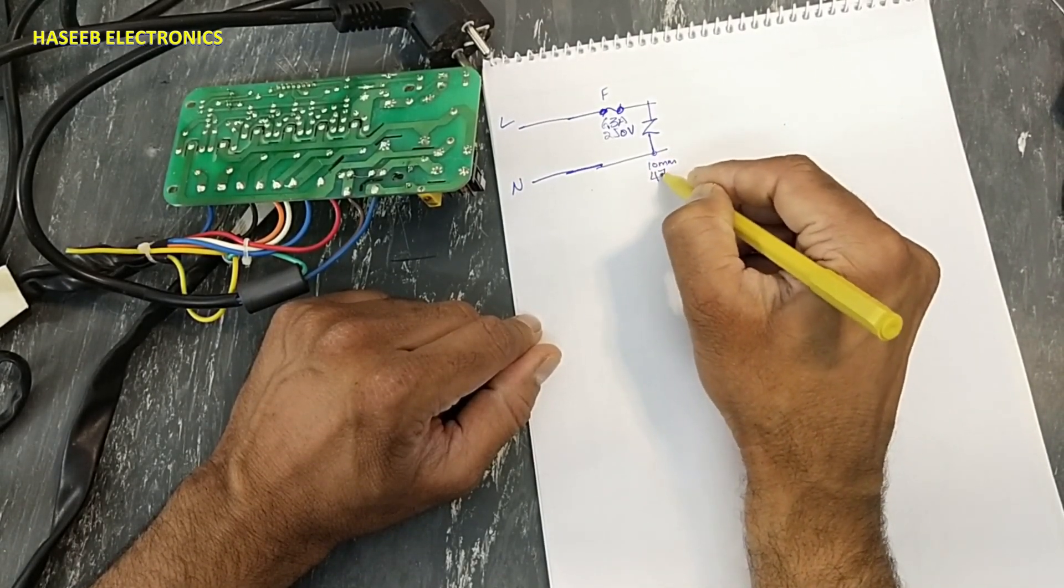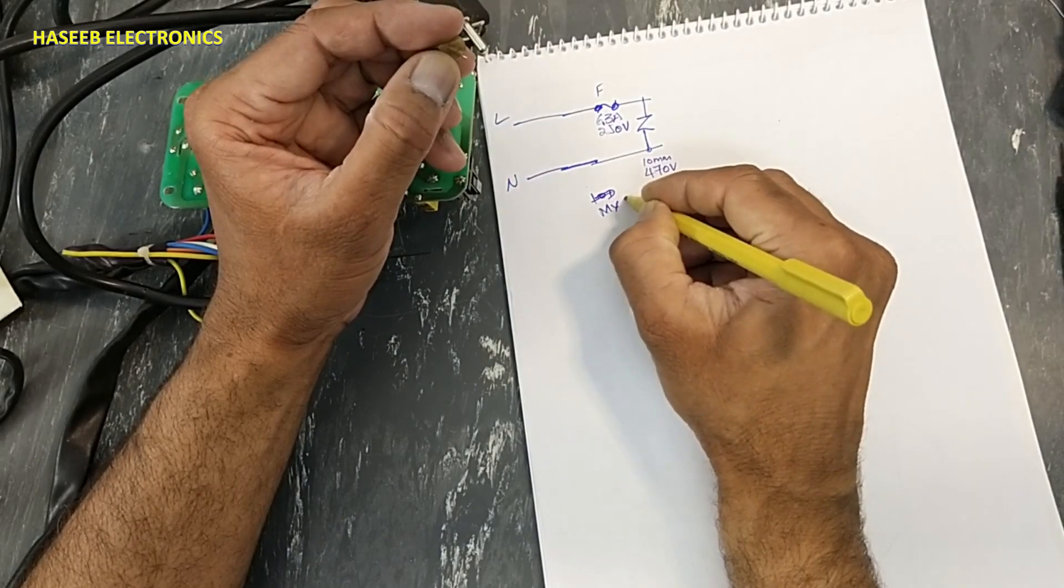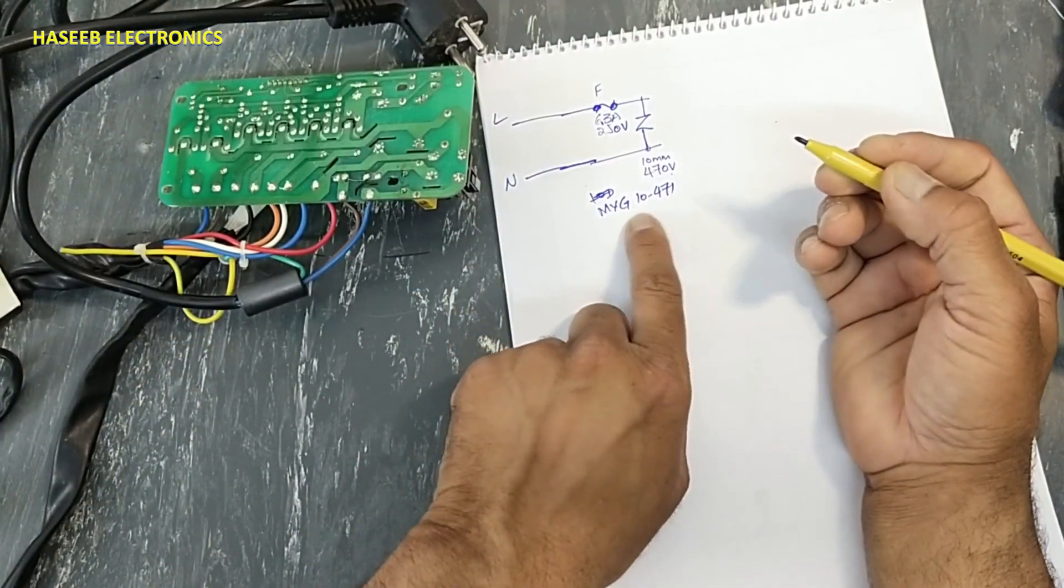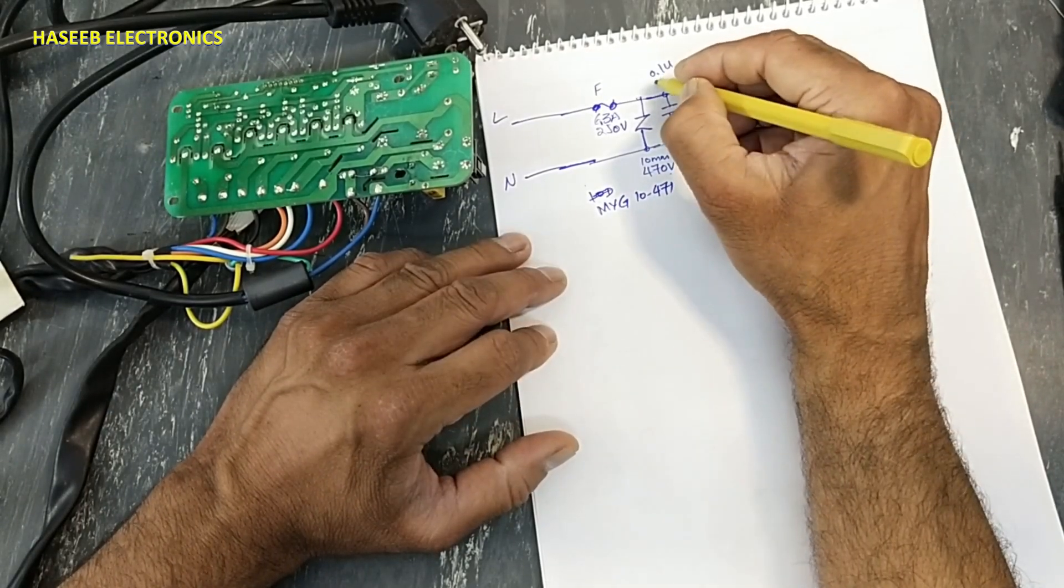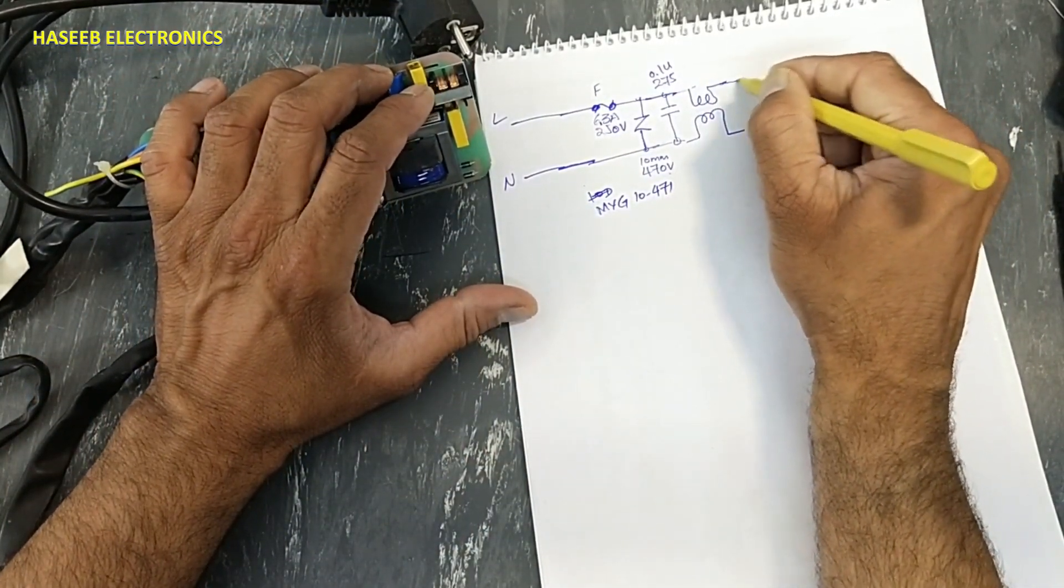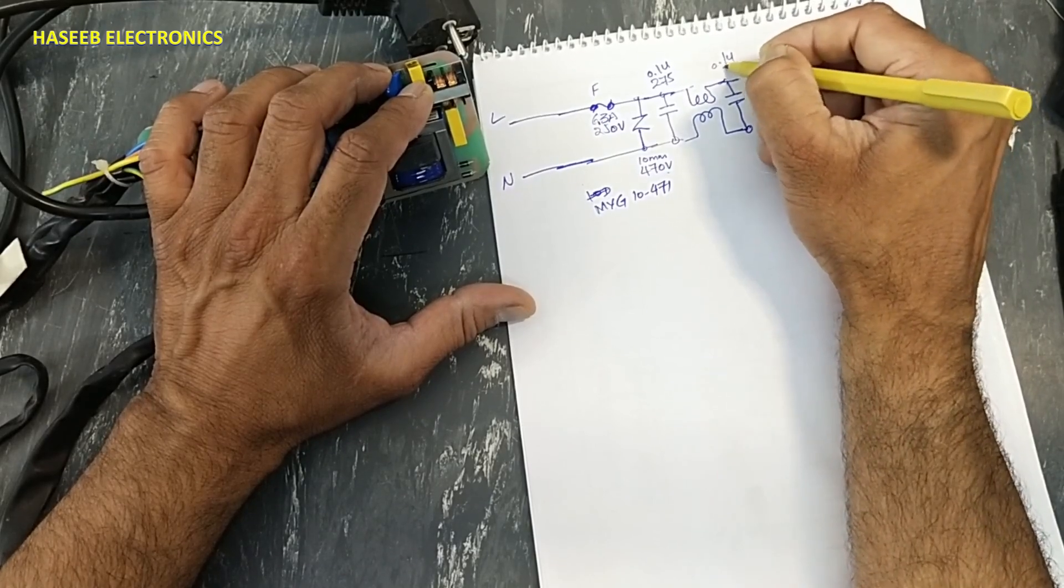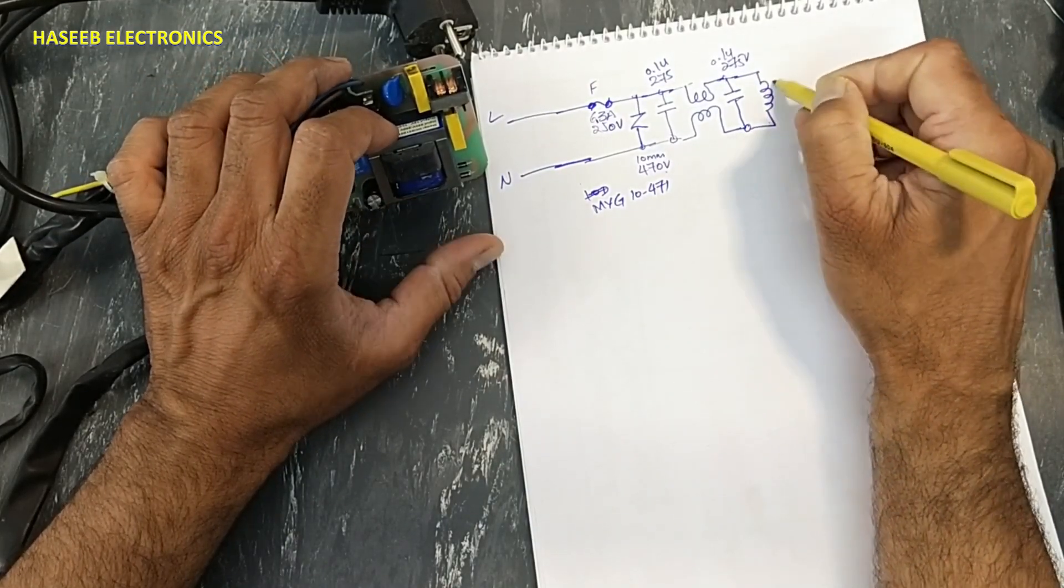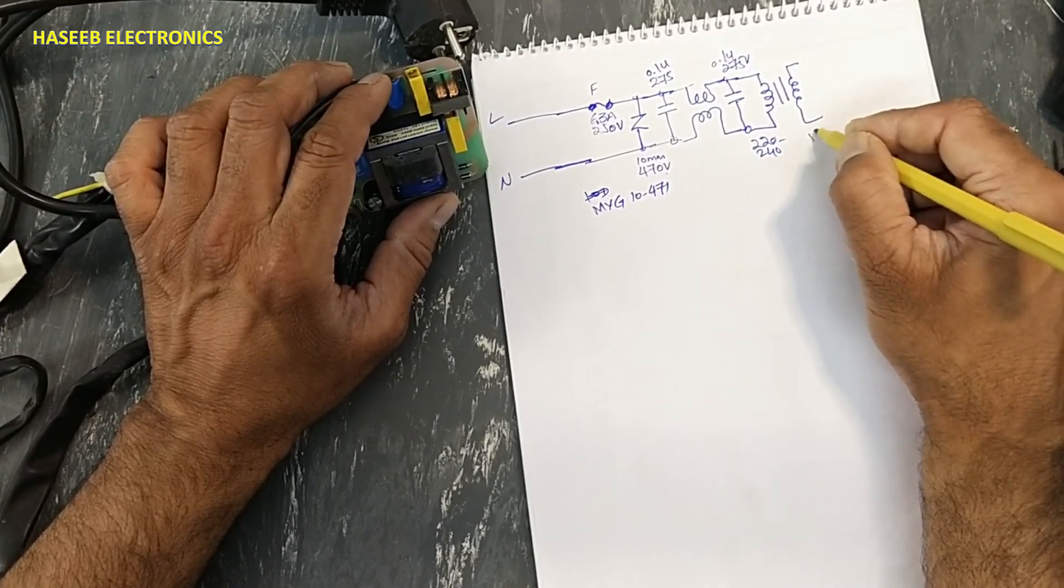The original number was MYG 10471, 10 millimeter, 470 volt. Then here we have a class X capacitor, 0.1 microfarad, 275 volt AC. This is an EMI filter, dual line filter. Then it has a class X capacitor, the same value: 0.1 microfarad, 275 volts.